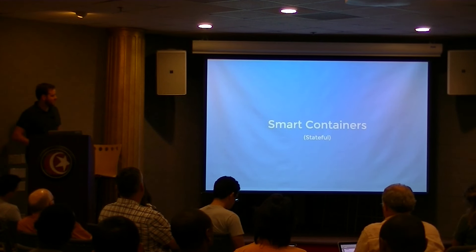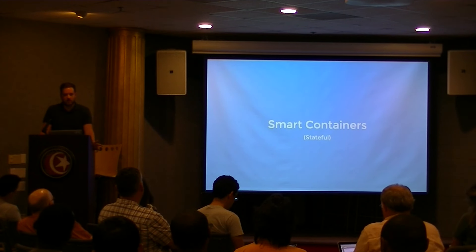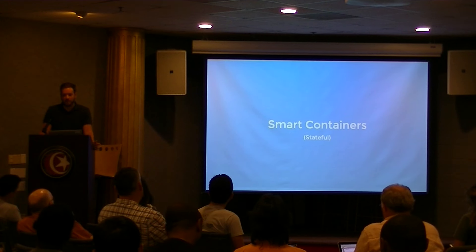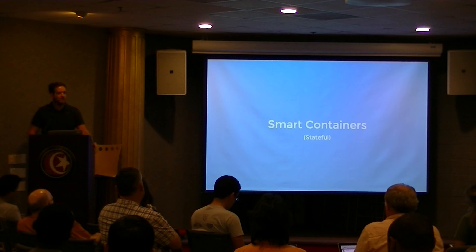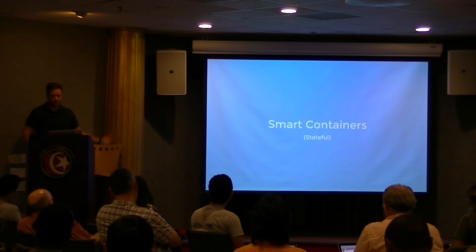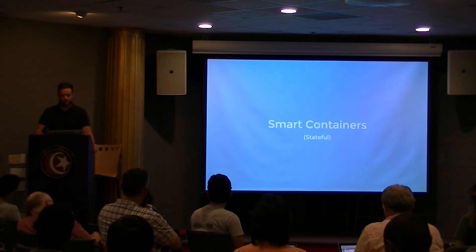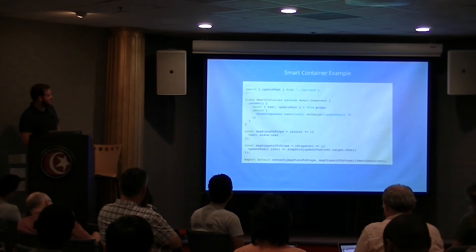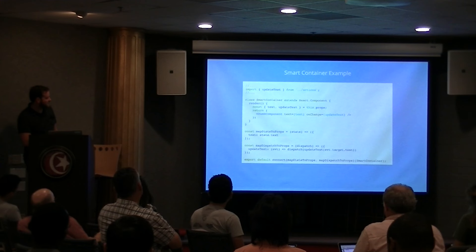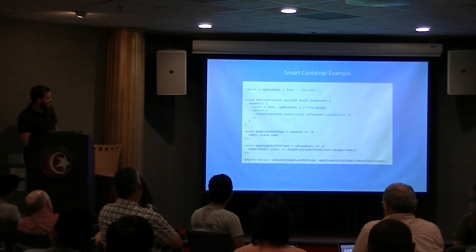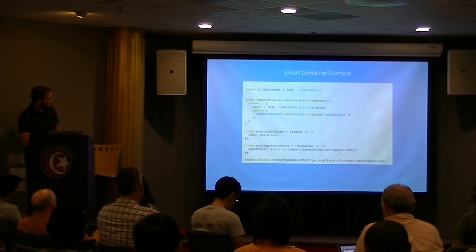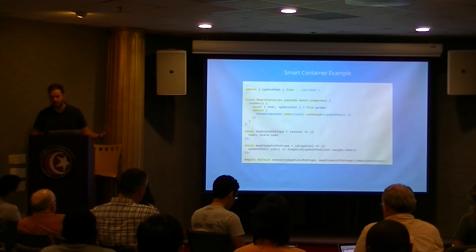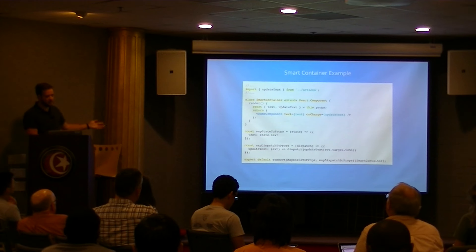Smart containers are stateful. They're concerned with how things work. They provide data and behavior to child components — whether other containers or dumb components. They call Redux actions, access Redux state, and are often stateful because they serve as the data sources for your application. Here's an example: it imports an action, accesses Redux state via the mapStateToProps function, dispatches actions, creates an action dispatcher, and passes it down into the dumb component. This is what handles all your business logic — it's application specific and can't just be dropped into another application.